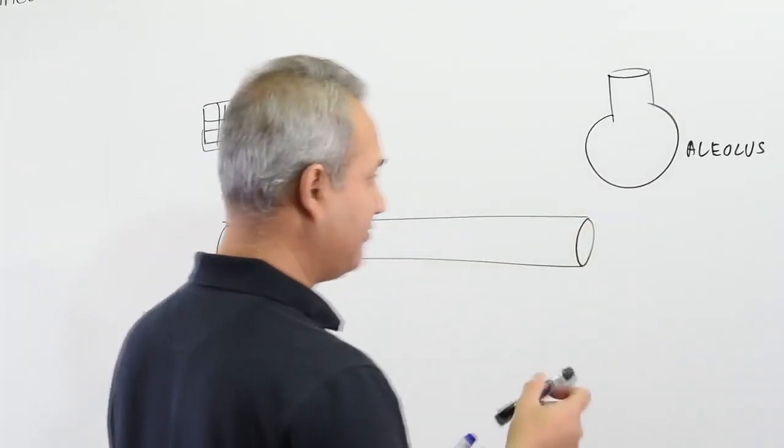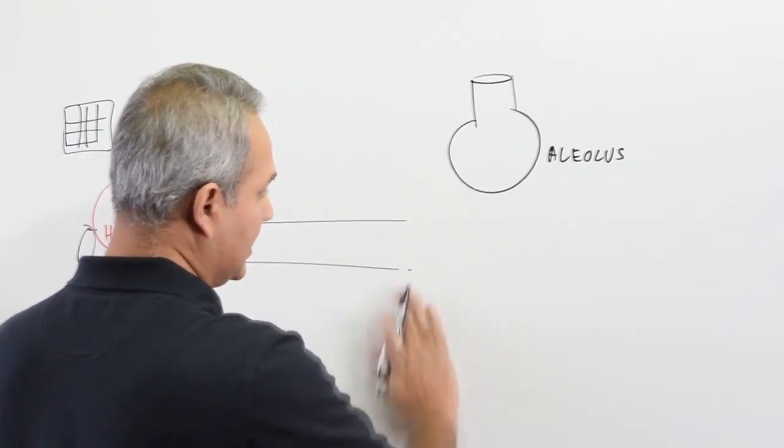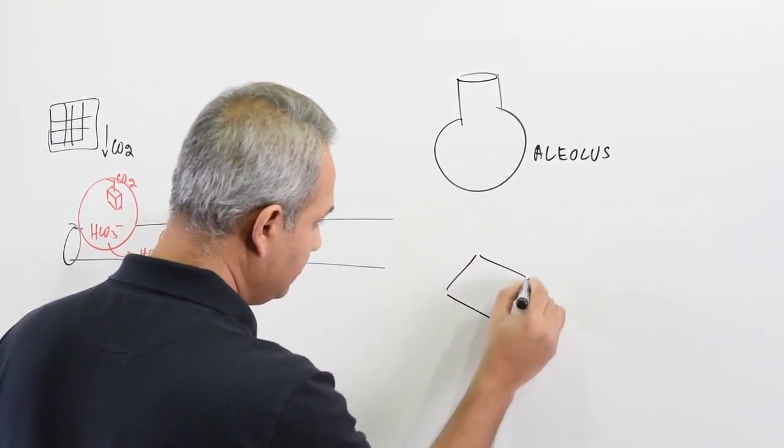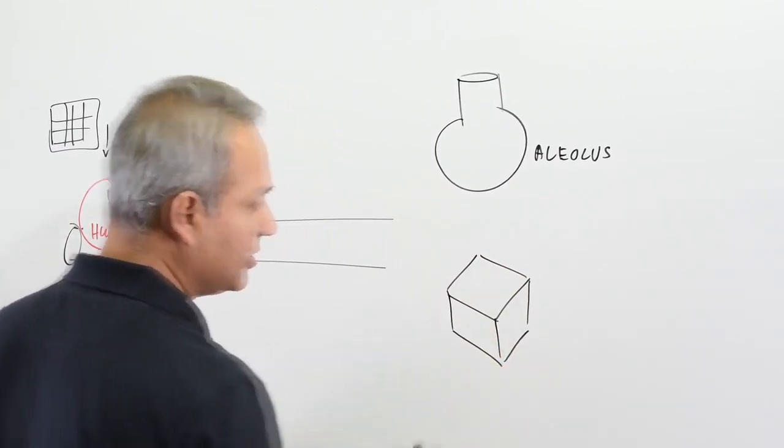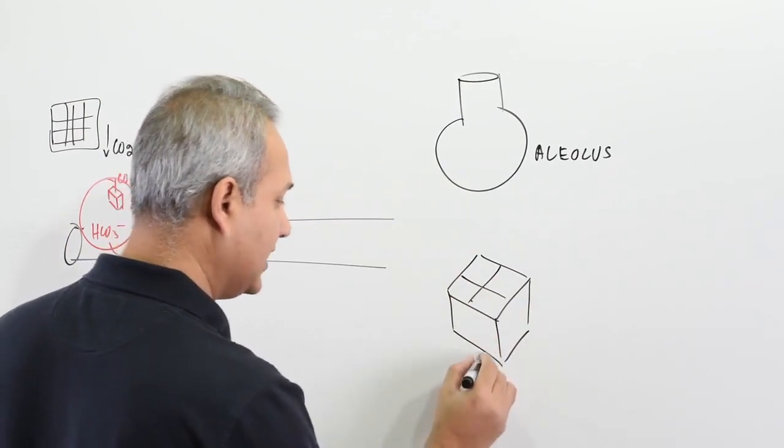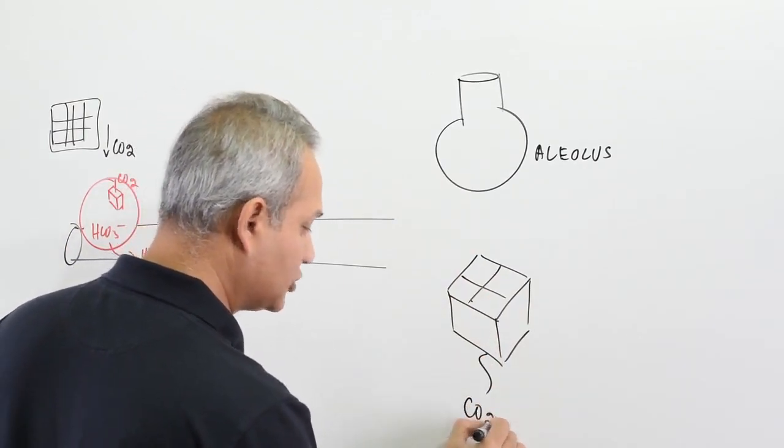Now when it comes here, the Haldane effect is this way. Let's look at hemoglobin. This is a hemoglobin molecule—of course the effect is pertinent to the hemoglobin. This molecule has carbon dioxide attached to it.